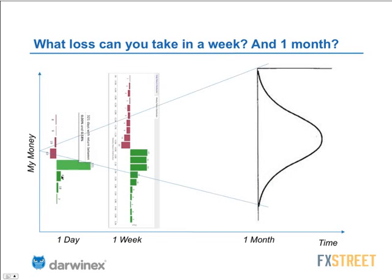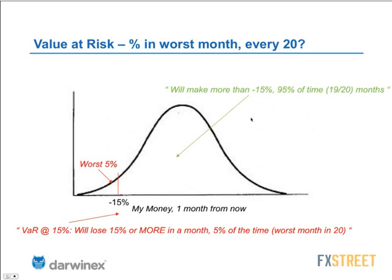Over one week, more things can happen than in one day — you could make more or lose more. If you trade full-time and spend one month trading, more losses and profits can accrue. The key question is: how much are you okay losing the worst month every 20? Because that is the first input into your trade-level management strategy.